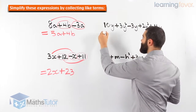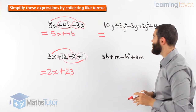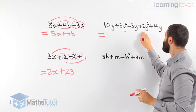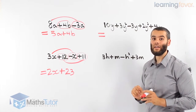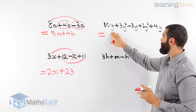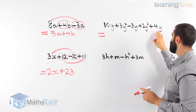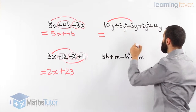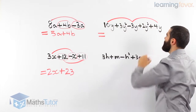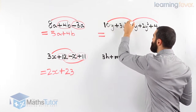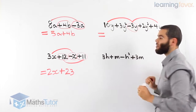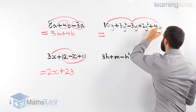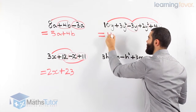This example looks long, but if we follow the rules, we're not going to have any issues. 10y plus 3y squared minus 3y plus 2y squared plus 4y. Let's collect like terms. We have y terms and y squared terms. The 10y minus 3y is 7y, and 7y plus 4y is 11y.